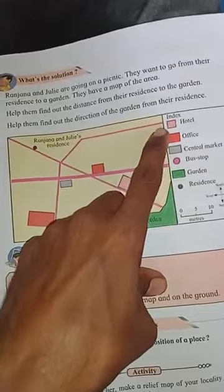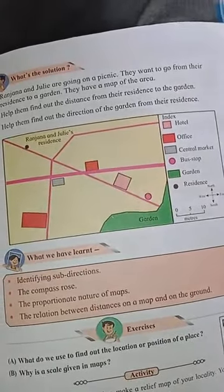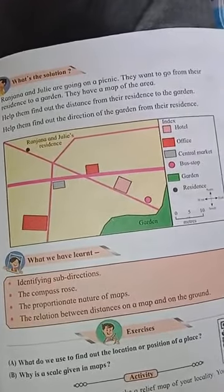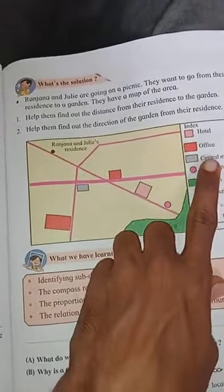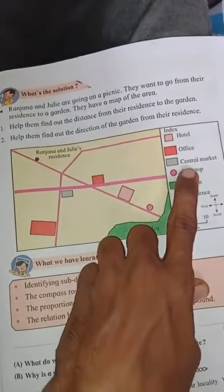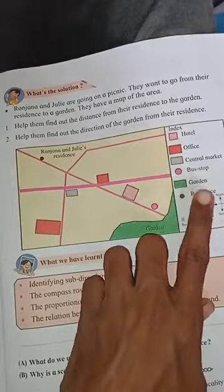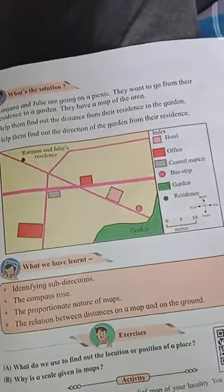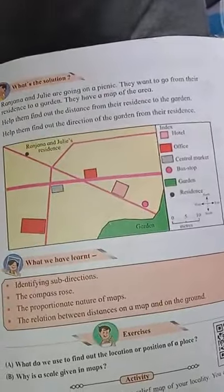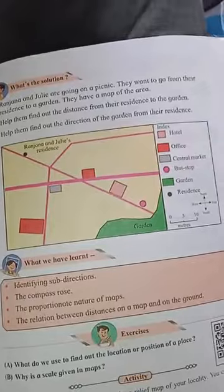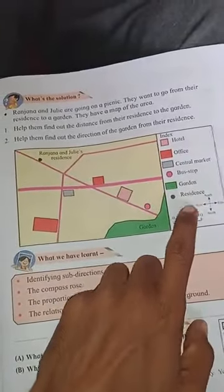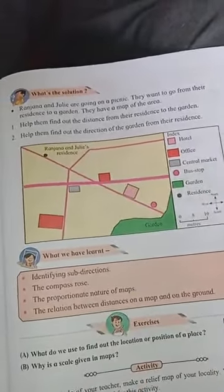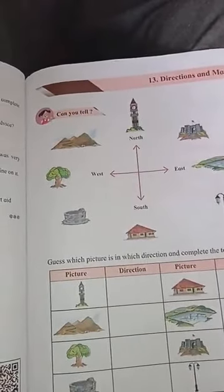We also have to draw symbols while showing anything on a map. Every location has to be indicated using different colors - for example, a hotel in pink, an office in red, a central market in gray, a bus stop in pink, a garden in green, and residential areas in black. In this way, while drawing the map, every location is indicated with a different color, making it easy to understand directions. Try to read this chapter and write the difficult words in your notebook.